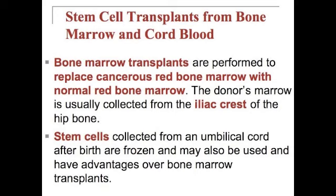Stem cell transplants from bone marrow and cord blood: bone marrow transplants are performed to replace cancerous red bone marrow with normal red bone marrow. The donor's marrow is usually collected from the iliac crest of the hip bone. Stem cells collected from an umbilical cord after birth can be frozen and may also be used, and have advantages over bone marrow transplants. Some parents will do this for their children — the idea is that if the stem cells are frozen, they can later be harvested to help improve the child's health in adulthood.